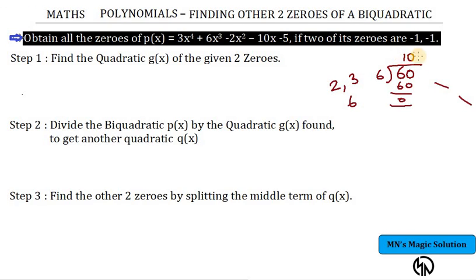So in the 10 now I am going to split: 2 into 5 is 10, so the other 2 factors for 60 other than 2 and 3 are 2 and 5.